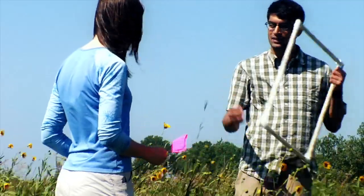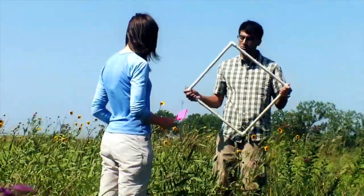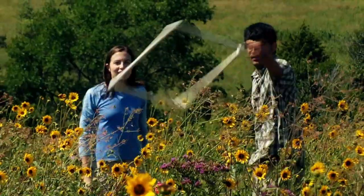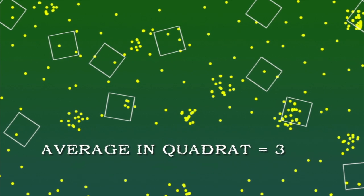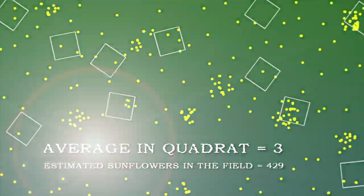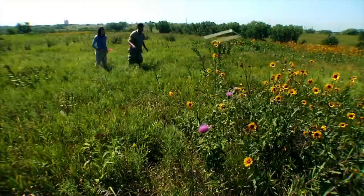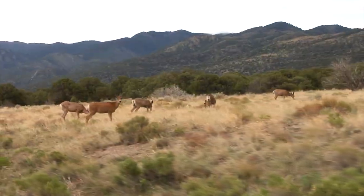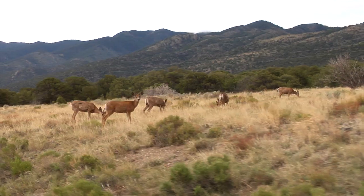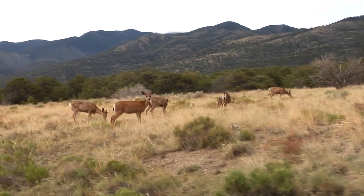By randomly putting quadrats out into a field, you can get an estimate of how many plants are in a certain area. Of course, this technique doesn't work so well with animals that move, and that is where other techniques come in handy, like mark and recapture.